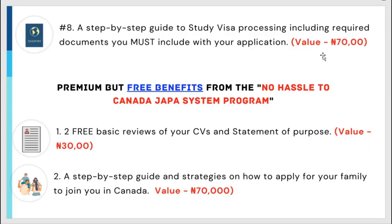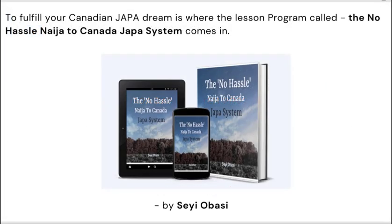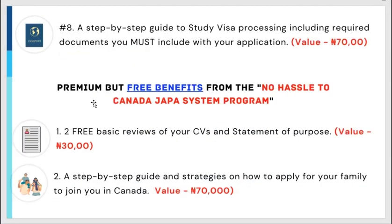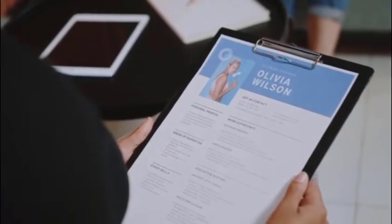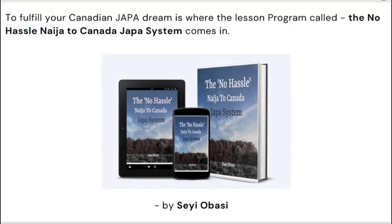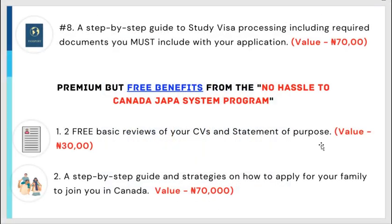Those are the basic benefits from the No Hassle Japa program. Now let's look at the premium — but free — benefits. Number one: you get two free basic reviews of your CV and statement of purpose. In case you are writing to a professor, the team will review and check your CV and statement of purpose for mistakes — valued at 30,000 Naira but included for free.